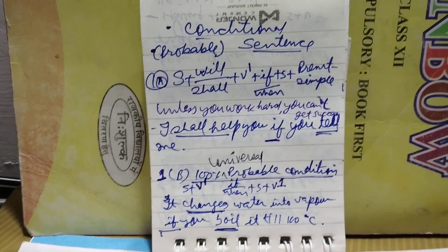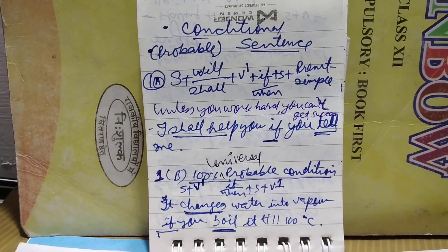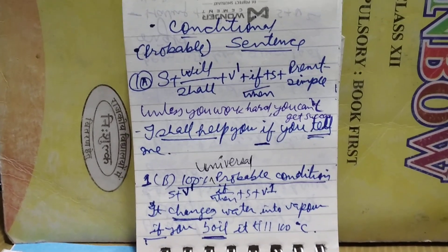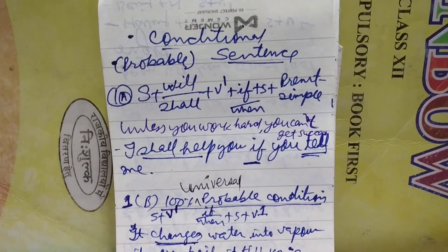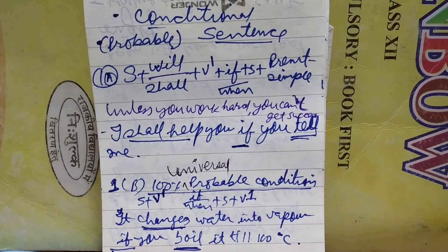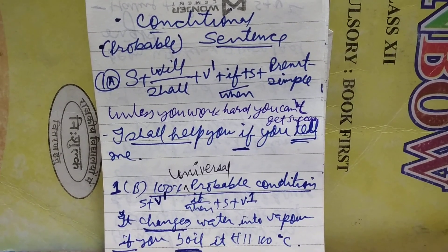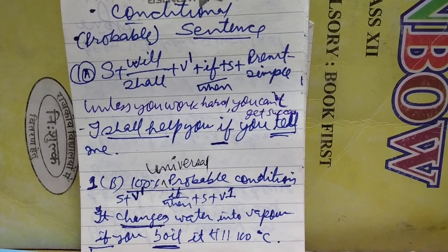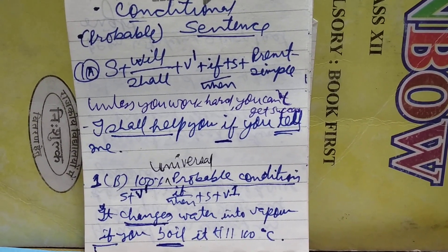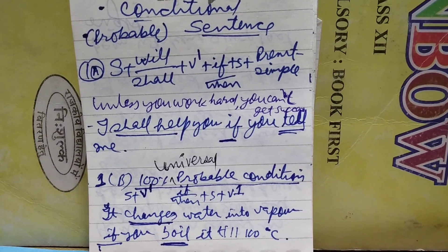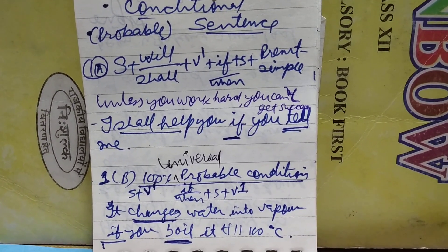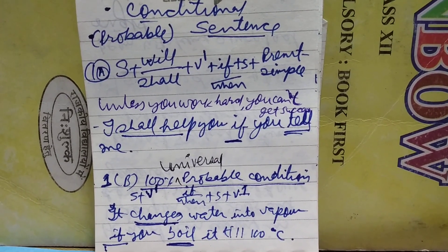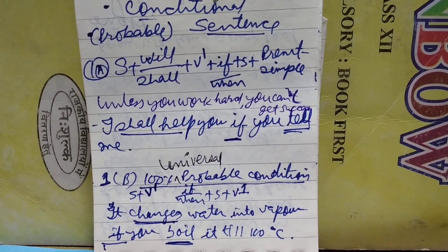For your help, some examples have been given here about conditional sentences. The first probable condition uses: subject plus will/shall plus V1 in the main clause, and present simple in the if-clause. In place of 'if not', we can also use 'unless'. For example: unless you work hard, you can't get success; I shall help you if you tell me.